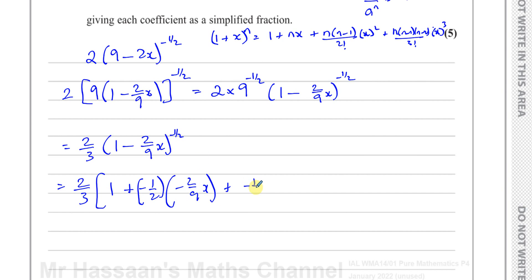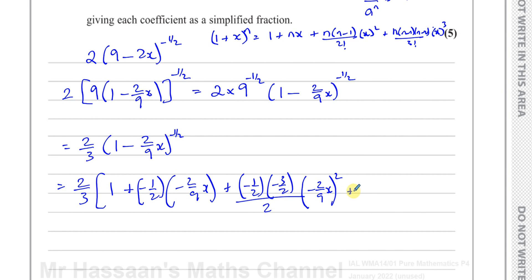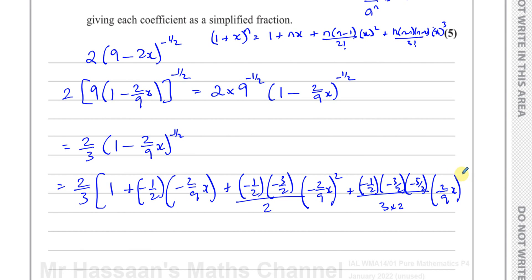n is negative one half, and n minus 1 is negative three over two. Over 2 factorial, which is 2, times x squared, which is (−2/9 x)². For the fourth term: n(n−1)(n−2) gives (−1/2)(−3/2)(−5/2), over 3 factorial, which is 3 times 2, times (−2/9 x) cubed. That's as far as we need to go because it says the first four terms in the expansion.